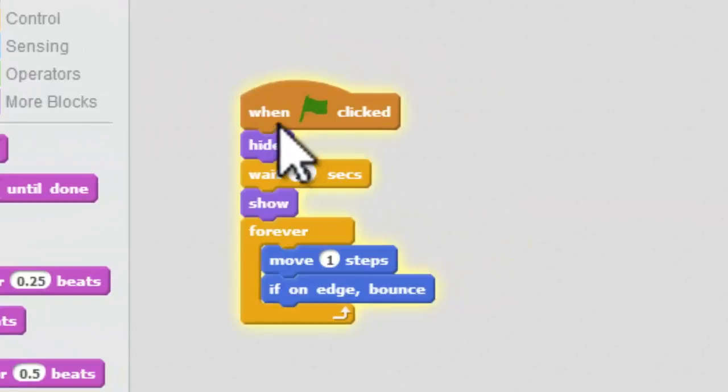So I'll show you the code just so you can see it. Under my lightning bolt I have when green flag clicked, hide, and then wait 10 seconds, and then show. And so that gives me a little bit of time before the game starts.